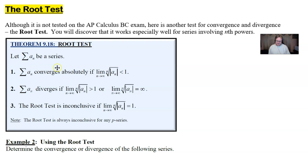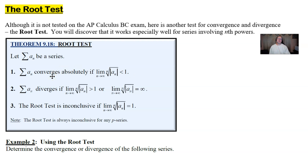So what is this root test? Let's say you've got a series — the summation of a sub n. It will converge absolutely if the limit as n approaches infinity of the nth root of the absolute value of that nth term expression is less than one. The good news is you still have the same conclusion: less than one means it converges, just like the ratio test. The difference is that you're not taking the limit of a ratio of the (n+1)th term over the nth term — you're taking the limit of the nth root.